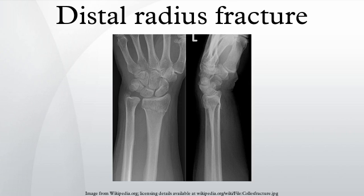Distal fracture of the radius is the most commonly occurring fracture in adults. It is common in the elderly because of frequent osteopenia and osteoporosis in this age group. This is also a common injury in children, which may involve the growth plate — a similar fracture in children involving the growth plate is called a Salter-Harris fracture. In young adults, the injury is often very severe because it requires greater force to produce.